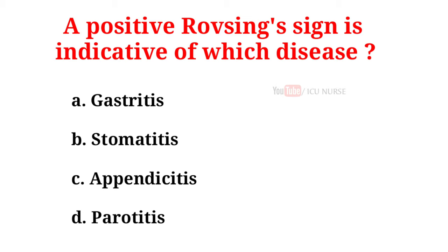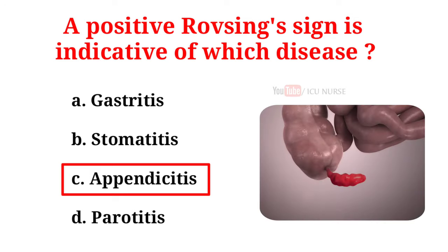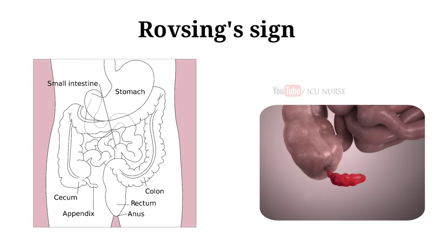A positive Rovsing's sign is indicative of which disease? A. Gastritis. B. Stomatitis. C. Appendicitis. D. Peritonitis. And the correct answer is C. Appendicitis. Rovsing's sign is a sign of appendicitis. If palpation of the left lower quadrant of a person's abdomen increases the pain felt in the right lower quadrant, the patient is said to have a positive Rovsing's sign and may have appendicitis.